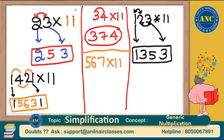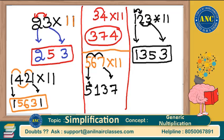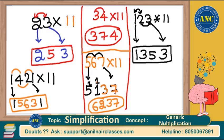One last example: 567 into 11. Write 5 as first digit, 7 as last digit. 5+6=11 — write 1, carry 1. 6+7=13 — write 3, carry 1. Now finalize: 7 stays, write 3, then 1+1=2 from the carry, and 5+1=6. Answer is 6237. Multiplying by 11 should never be a difficulty.